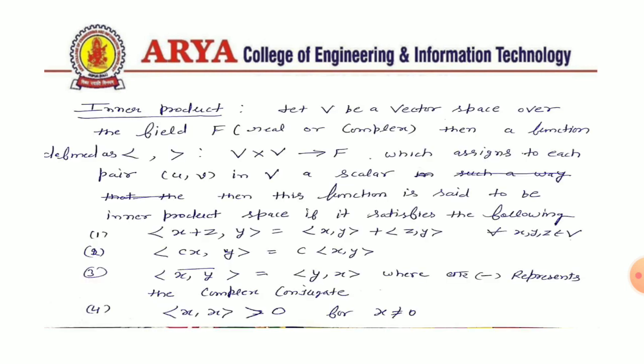What is the inner product? How to define an inner product function? Let V be a vector space over the field F. Then, a function defined from V cross V to F, which assigns to each pair in V a scalar, is known as inner product if it satisfies the following conditions.